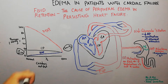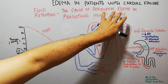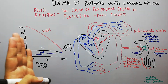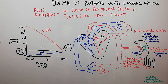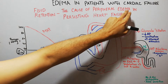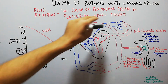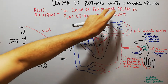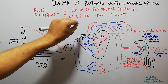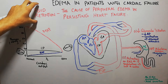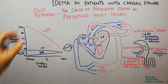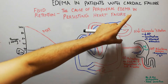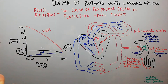Edema is basically of two types: one is pulmonary edema, which occurs in the lungs, and the second is peripheral edema, which is due to fluid collection in the peripheries — in the limbs. The basic cause of peripheral edema in persisting heart failure is fluid retention by the kidneys in the long term, and this is the main cause of peripheral edema, which we are going to discuss in detail.